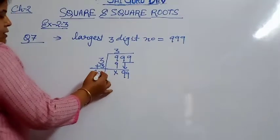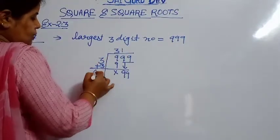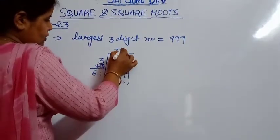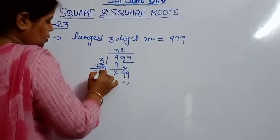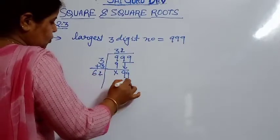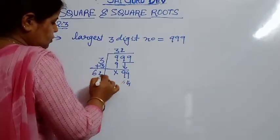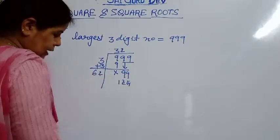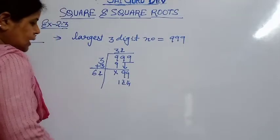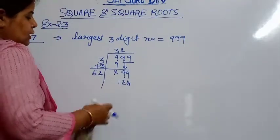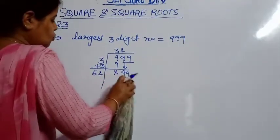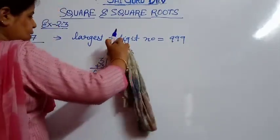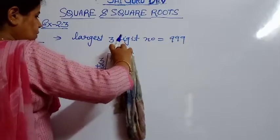If I select 1, it will be 61 times 1 = 61. If I select 2, it will be 62 times 2 = 124, which is greater than 99. So we cannot select 2. We will select 1.